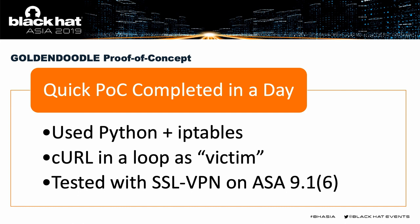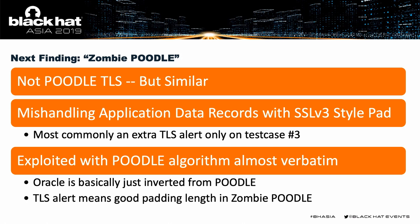The next finding is called Zombie Poodle — similar to Poodle but different. Poodle is specifically the use of the SSLv3 padding mechanism in TLS. Zombie Poodle is looking for any types of signals indicating non-deterministic padding, and using those with an algorithm the same as Poodle but with a different oracle. For the most common case, it's almost like an inversion of the Poodle oracle. With Poodle, you're looking for an alert — when the alert happens, your data was not good; when there's no alert, you got a positive oracle response. With Zombie Poodle, when you get an alert, it often is telling you that your oracle was positive.